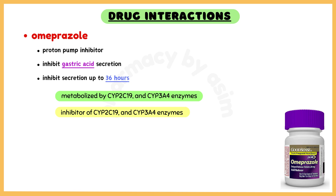Omeprazole is a proton pump inhibitor, inhibiting gastric acid secretion for up to 36 hours. Omeprazole is metabolized by CYP2C19 and CYP3A4 enzymes, and is also an in vivo inhibitor of these two enzymes.